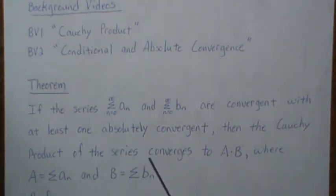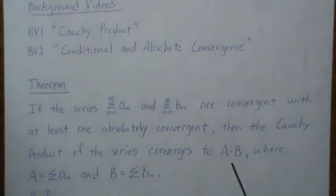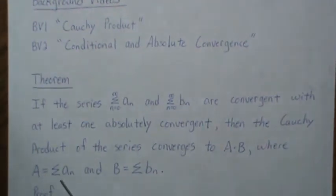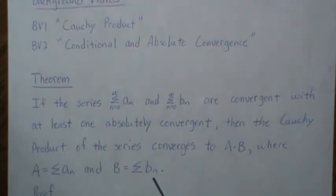then the Cauchy product of the series converges to A times B where A is the limit of the series AN and B is the limit of the series BN.